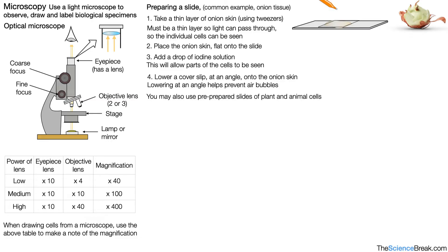We may also use pre-prepared slides of plant and animal cells. We don't have to do it necessarily with onion skin. We could also do it with slides that have been pre-prepared for us. We would then use a microscope to observe the cells on the slides.